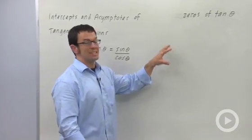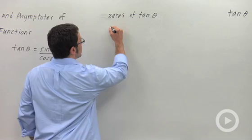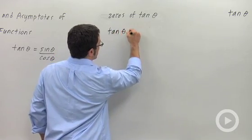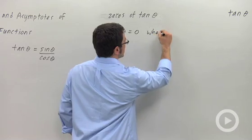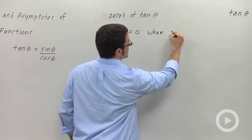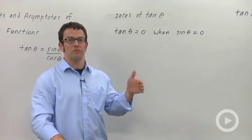Let's first find the zeros of tangent. Because of that identity, the zeros of tangent will be exactly the same as the zeros of sine. That is tangent theta equals zero when sine theta equals zero. Now sine theta equals zero at the integer multiples of pi.